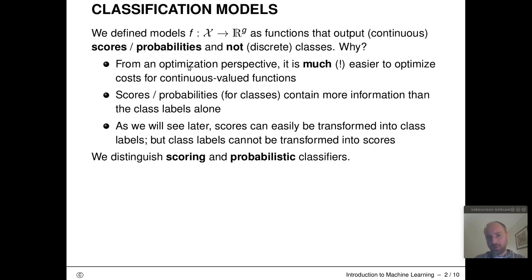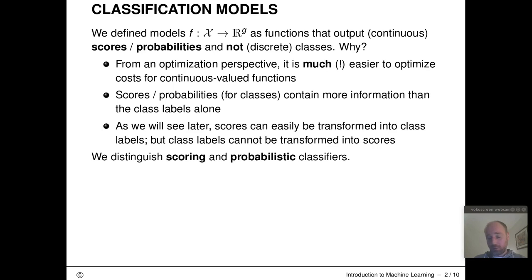The second reason is more technical and comes from an optimization perspective. We will later see that we want to put loss functions on predictions, write down the empirical risk, and optimize our classification model's parameters. From an optimization perspective, it is much easier to deal with continuous values than discrete categorical predictions. And as we will also see, scores can easily be transformed into class labels, but we cannot go the other way around, because discrete class labels contain much less information than numerical confidence scores.